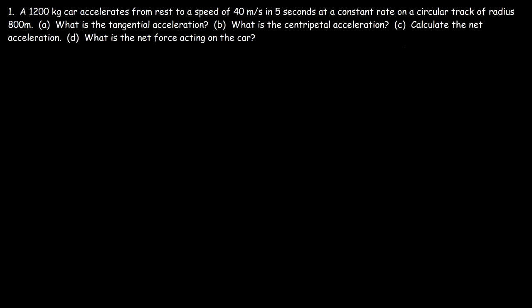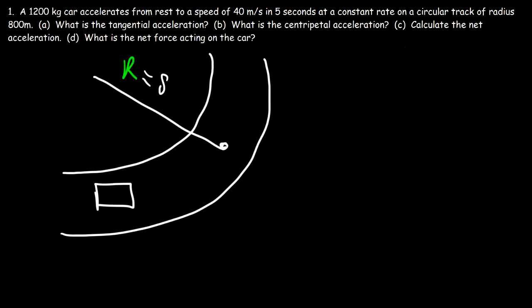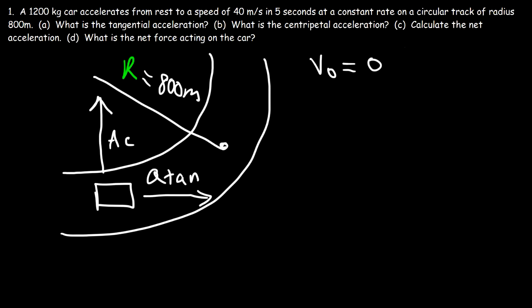Now let's work on a problem. A 1200-kilogram car accelerates from rest to a speed of 40 meters per second in five seconds at a constant rate on a circular track of radius 800 meters. The car has a centripetal acceleration pointing toward the center and a tangential acceleration. The initial speed is zero and the final speed is 40 m/s in five seconds.